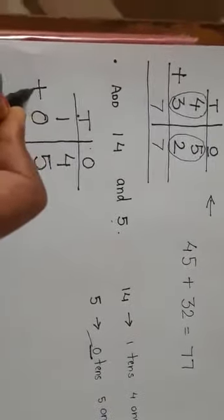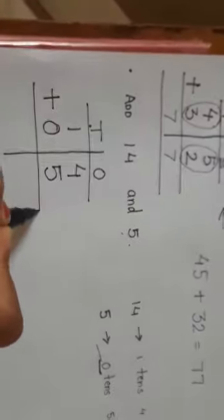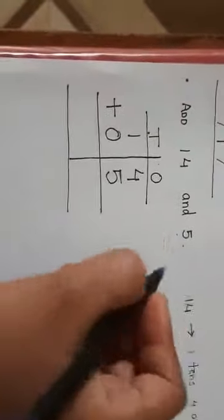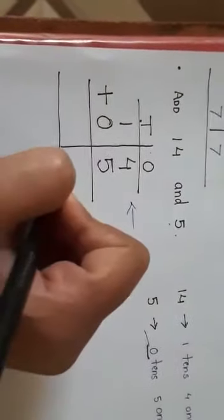Very good children. So I am going to put the plus sign here. And then again we will start adding. Kahaan se add karenge? From which side? Yes. Right side. So from this side we will start adding.